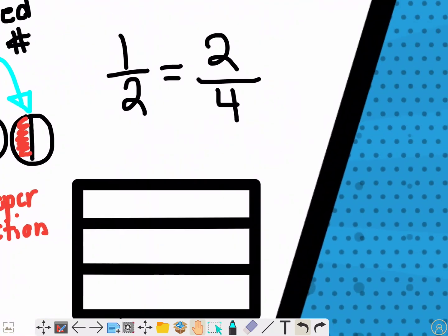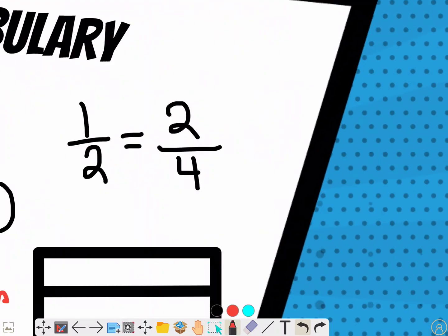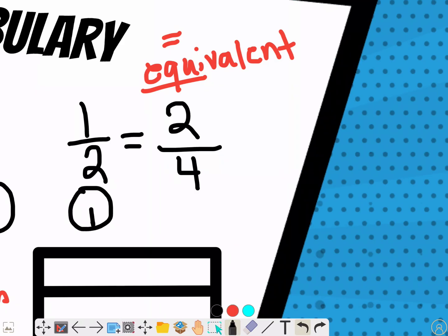The last one, these are equivalent fractions. Equivalent fractions, equa means equal. They are equivalent, meaning that although it might look different in cut up amounts, one half and two fourths are the same amount. So you can have two fractions that have way different numerators and denominators, but they're still equal.